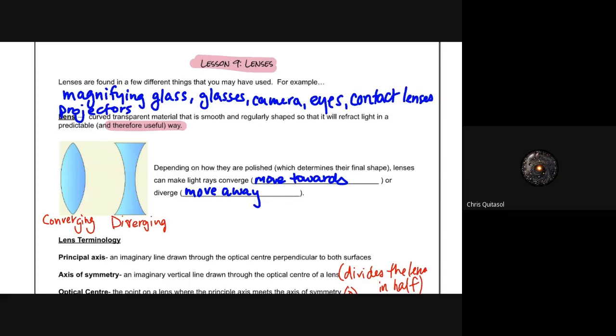There are two types of lenses we learn about in this class. The first is converging, the second is diverging. Depending on how they are polished and the final shape of that lens, lenses can make rays converge or move towards a specific point, or diverge or move away from a specific point.